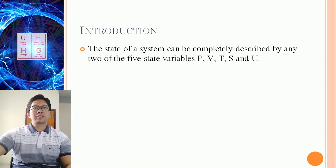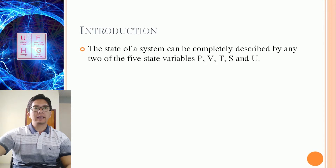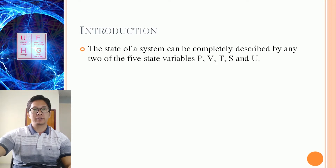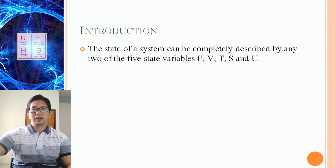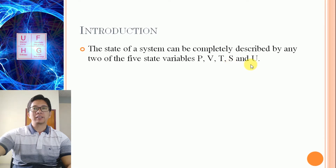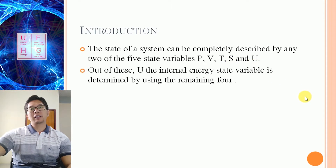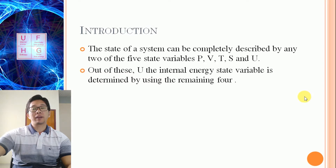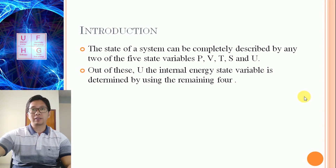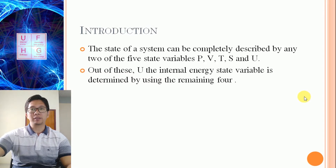The state of a system can be completely described by any of the five state variables: pressure, volume, temperature, entropy, and internal energy. Out of these, internal energy is determined by using the remaining four, that is pressure, volume, temperature, and entropy.